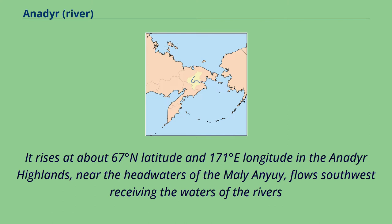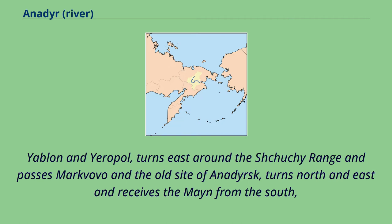It rises at about 67 degrees north latitude and 171 degrees east longitude in the Anadyr highlands, near the headwaters of the Mali Anadyr, flows southwest receiving the waters of the rivers Yablon and Yaropol, turns east around the Chukotka range and passes Markovo and the old site of Anadyrsk, then turns north and east and receives the Mainyi from the south.